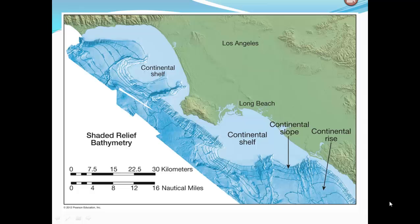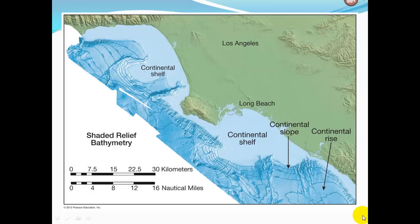Here's a shaded relief map showing shaded bathymetry. As you go down, you can see the slope going deeper. The lines, just like topographic contour lines, each represent a particular elevation. The closer the lines are together, the steeper the surface is.